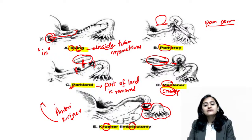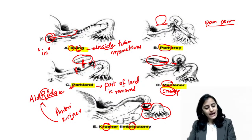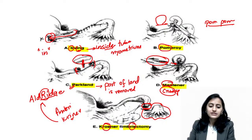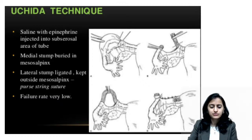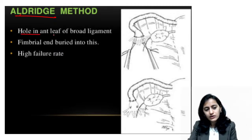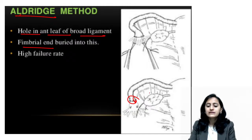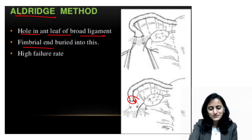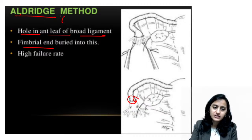The modification of the Criner's technique is the Aldrich technique. In the Aldrich method, a hole is created in the anterior leaf of the broad ligament, and the fimbrial end is buried into it. So after performing the fimbrectomy, the fimbrial end is buried into that hole. Aldrich is the modification of Criner's — both are fimbrectomy-related.